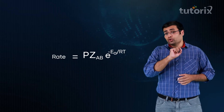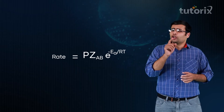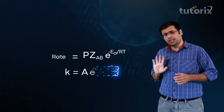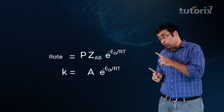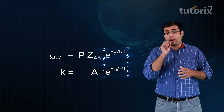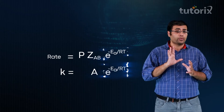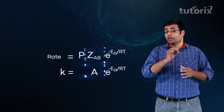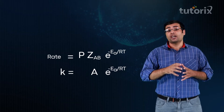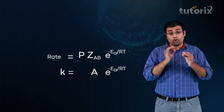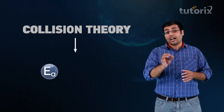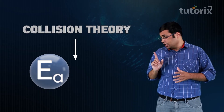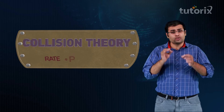Recall that we also learned another expression for the rate constant from the Arrhenius equation. Comparing both equations, the term e^(−Ea/RT) is common to both. The pre-exponential factor A in the Arrhenius equation is quite similar to ZAB in the collision theory expression. The only difference is the extra term P — the probability factor — which tells us that reactants must collide not only with sufficient energy Ea but also with proper orientation. This collision theory seems quite complete.